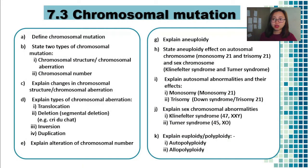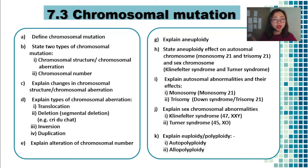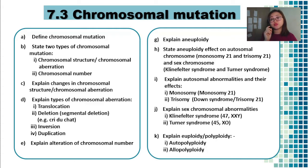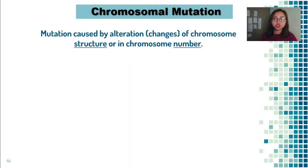Here are the learning outcomes we expect you to achieve by the end of this lesson. You need to know what chromosomal mutation is, give the definition, and state the two types: chromosomal structure mutation and chromosomal number mutation. For each of those two types, we will learn about the different subtypes and examples of what happens to a human when they have these types of mutation.